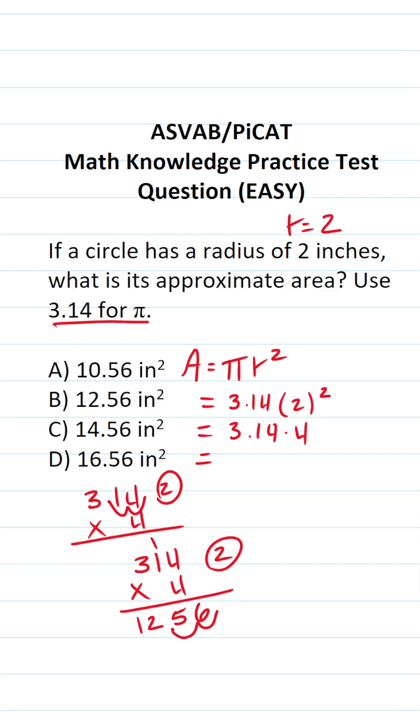Bring in our two decimals. We can see that the area of this circle is going to be 12.56 square inches. So the answer to this one is B, of course.